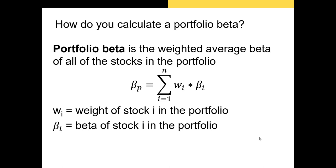You might be wondering how we calculate the portfolio beta — and it's really simple. We collect the beta of each security, multiply those betas by the weights of each security in the portfolio, and then sum up those weight-times-beta products. In other words, the portfolio beta is calculated as a weighted average, very similar to the way we calculate a portfolio return.